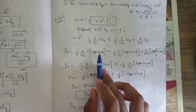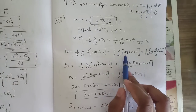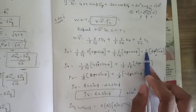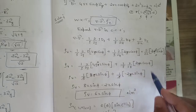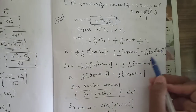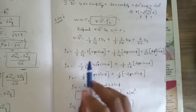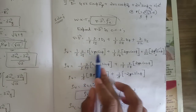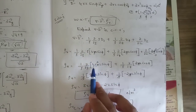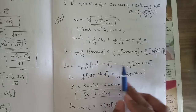Substituting: (1/ρ)(∂/∂ρ)(ρ · 4ρz sinφ) + (1/ρ)(∂/∂φ)(2ρz cosφ) + ∂/∂z(2ρ² sinφ). There is no z dependence in 2ρ² sinφ, so the last term vanishes. Multiplying ρ into the first term gives 4ρ²z sinφ, so we have (1/ρ)(∂/∂ρ)(4ρ²z sinφ).